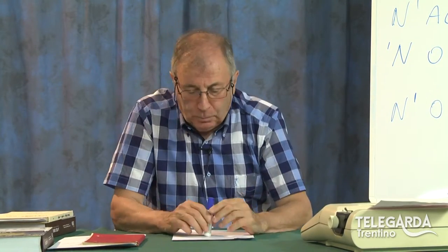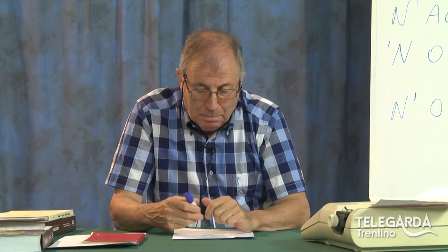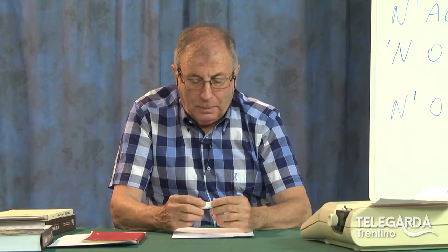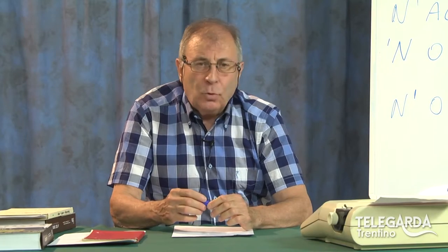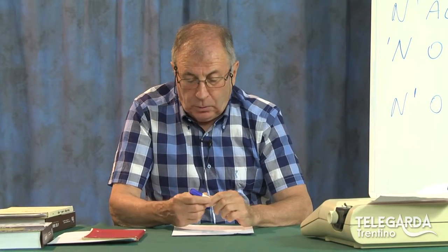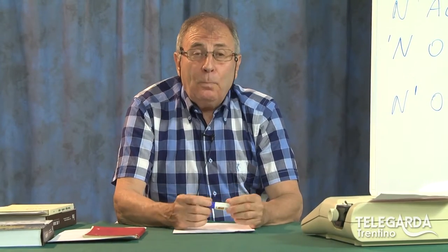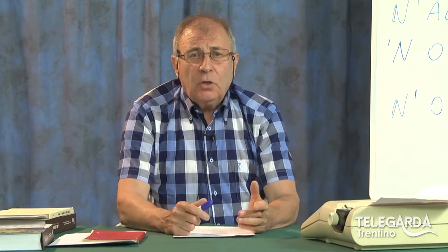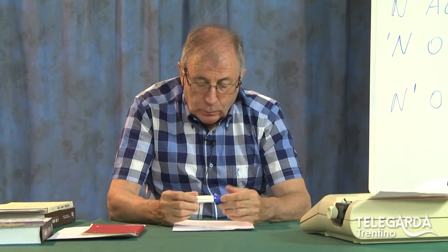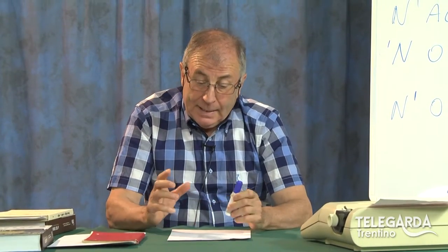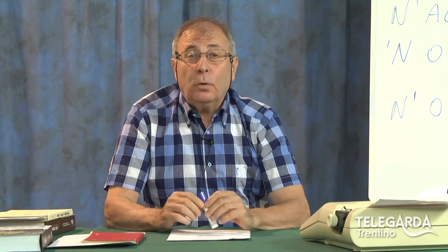Vi dico subito che oggi non parlo più di apostrofi, di elisione o troncamento, ma oggi parlo di metrica. Ritorno su un argomento del quale ho parlato molto tempo fa, cioè sulla misura dei versi. Chi segue questa trasmissione ricorderà che ho detto che quando uno si accinge a scrivere in versi deve decidere se scrivere con dei versi ben misurati, con un certo numero di sillabe ben definito, oppure se usare il cosiddetto verso libero. Il problema è quando si decide di scrivere con una metrica ben precisa.